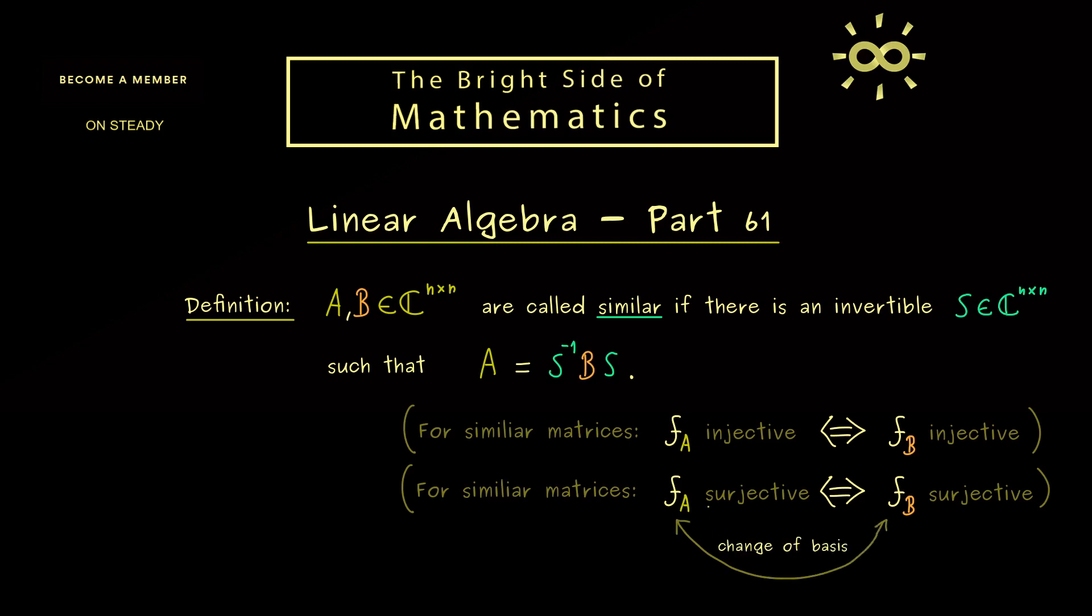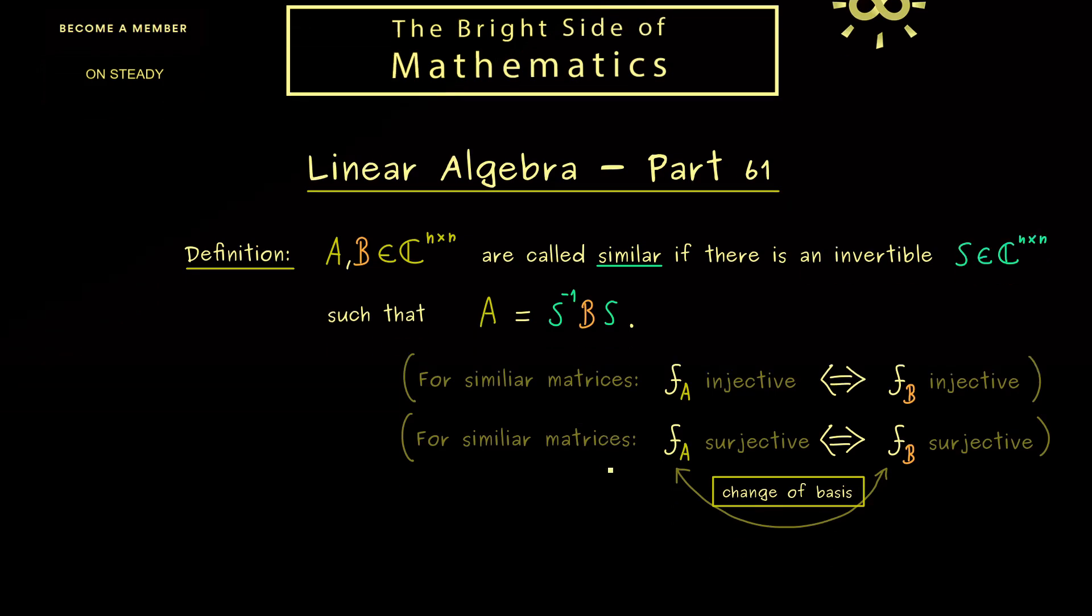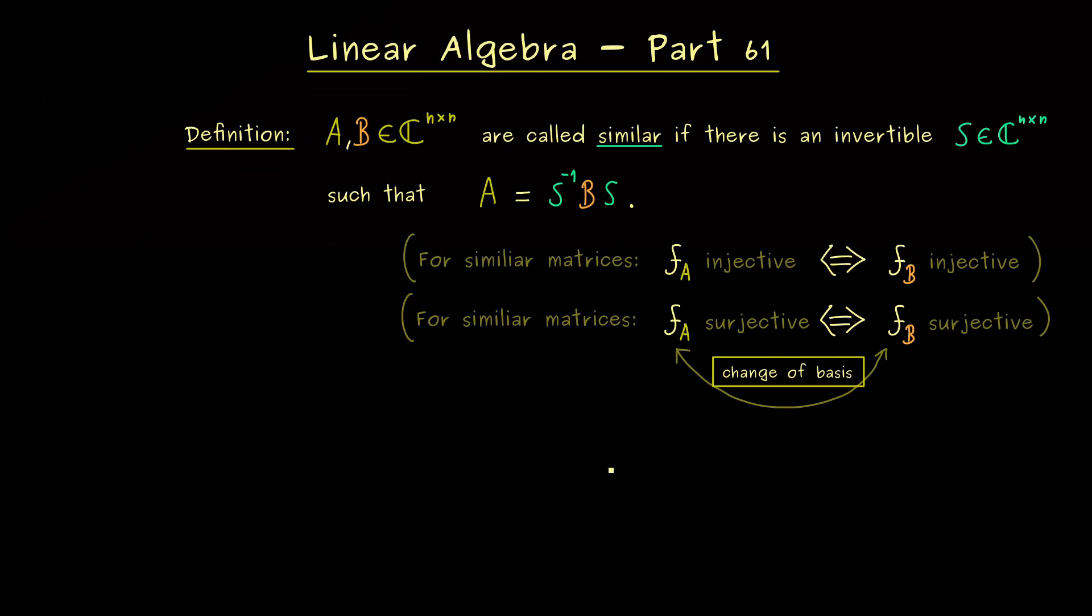So what people say is essentially that we have the same linear map just in different coordinate systems. And therefore, if you have a very particular problem you want to solve, you would change the coordinate system in one where your calculations get easier. However, that's definitely something for a different video, because here I first want to talk about the properties of similar matrices.